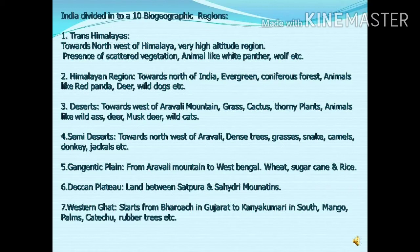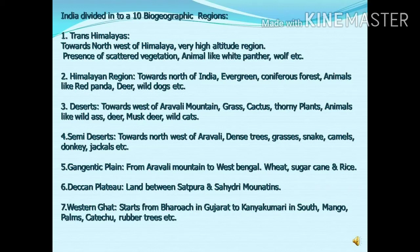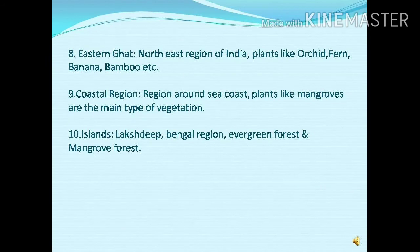The Western Ghats is one of the important parts of the biogeographic region of our country. It starts from Gujarat and extends south to Kanyakumari. A great variety of plants are observed in the Western Ghats. There are four or five types of forest reported here: evergreen forest, semi-evergreen forest, deciduous forest, thorny forest, and grassland. Different types of evergreen and deciduous trees are found, including teak, katechu, rubber trees, and mango.